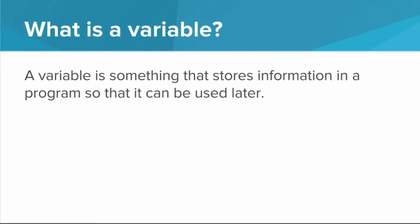Okay, so what is a variable? A variable is something that stores information in a program so that it can be used later. That information can be something like hello world or the number 50.